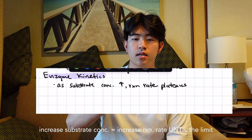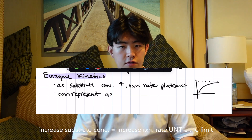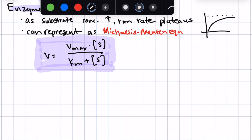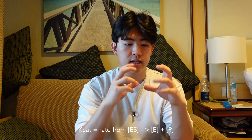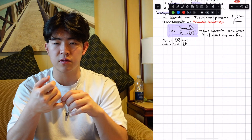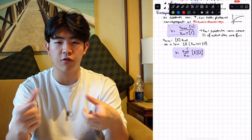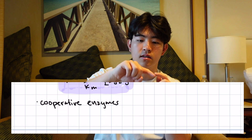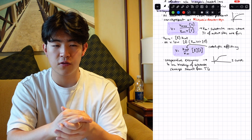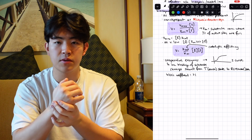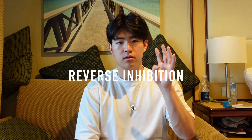For enzyme kinetics, as we increase substrate concentration the reaction rate increases but plateaus, giving a hyperbolic curve. This is represented by the Michaelis-Menten equation. Km is the substrate concentration at which half of the enzymes are occupied. Vmax equals kcat multiplied by the total enzyme concentration; kcat is the rate constant for conversion of the enzyme-substrate complex to enzyme plus products. Cooperative enzymes have different kinetics — instead of a hyperbolic curve they show an S-shaped curve. Increasing substrate binding shifts the enzyme from the tense state to the relaxed state, and we use the Hill coefficient to measure cooperativity.